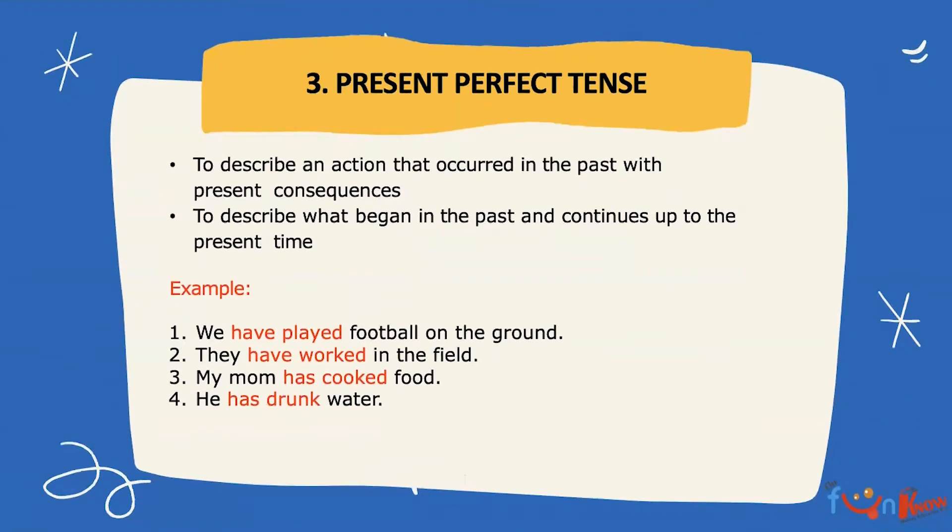What is present perfect tense? It is used to describe an action that occurred in the past with present consequences. It is also used to describe what began in the past and continues up to the present time. Let's see some examples.